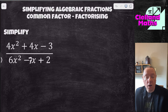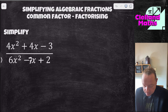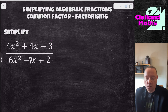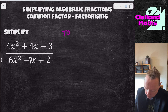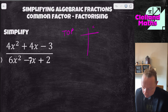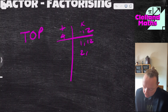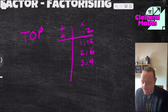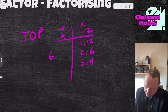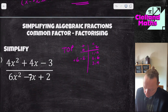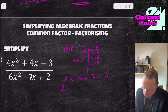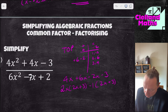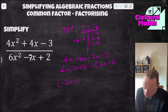Now a harder one: 4x² plus 4x minus 3 over 6x² minus 7x plus 2. For the top, multiply 4 and 3 to get 12. I need two numbers that multiply to minus 12 and add to 4 — that's 6 and minus 2. Splitting: 4x² plus 6x minus 2x minus 3. Factorising each half gives 2x(2x+3) minus 1(2x+3), so the top is (2x-1)(2x+3).